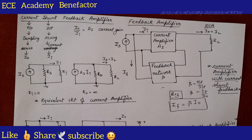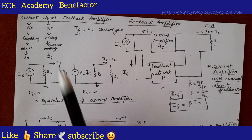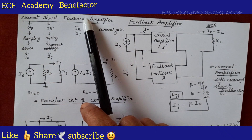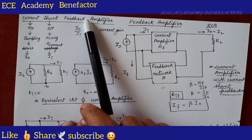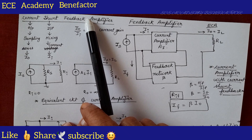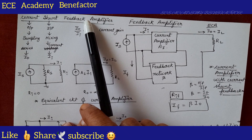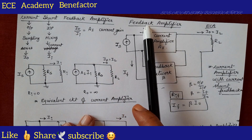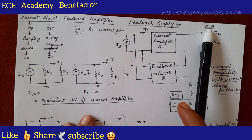Hello dear students, welcome to ECE Academy. In this class we will be seeing the derivation of ROF, that is output resistance with feedback, for a current shunt feedback amplifier. The unit name is feedback amplifier and the subject name is ECE.